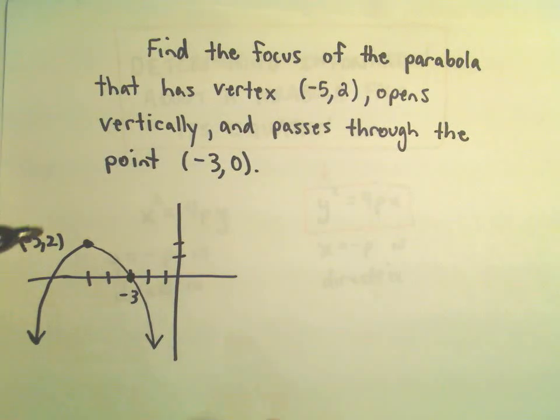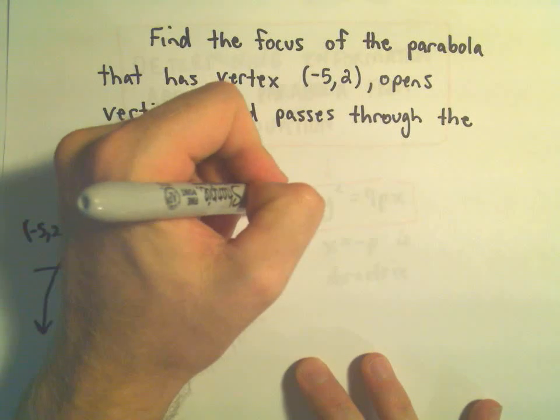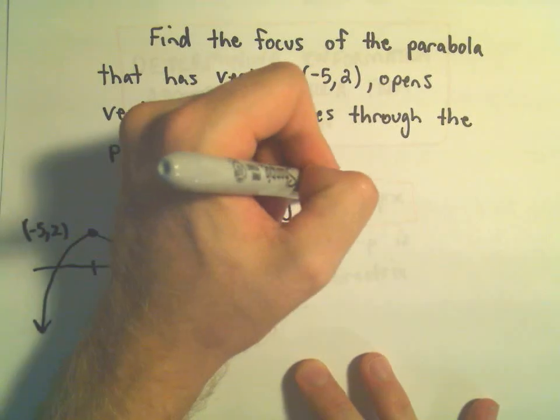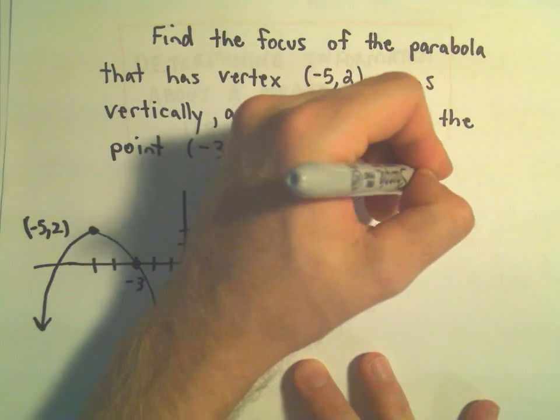So the focus should be sitting somewhere inside of there. But the first thing I'm going to do is find the equation. So it's of the form y equals a times (x minus h) squared plus k.